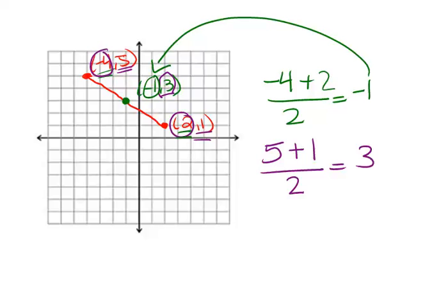Now we're going to talk about segment bisectors. You might remember from before that a bisector cuts something in half. So a segment bisector is something that cuts a line segment in half.